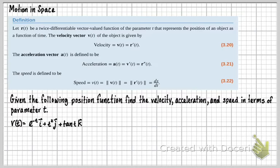The definition says let r(t) be a twice differentiable vector-valued function of the parameter t that represents the position of an object as a function of time. The velocity vector v(t) of an object is given by velocity equals r'(t).